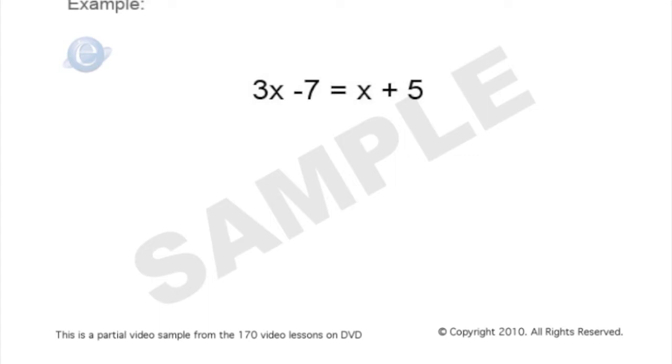The kind of standard way of doing this is to move all your variables to the side that has the largest variable. So since we have the 3x on the left, we'll move the x over by subtracting x from both sides.